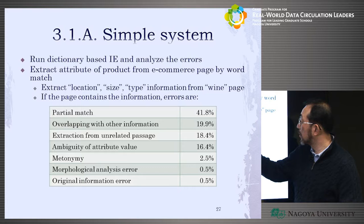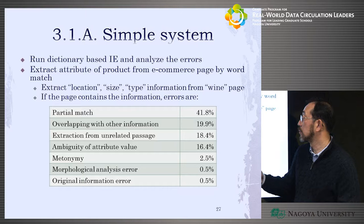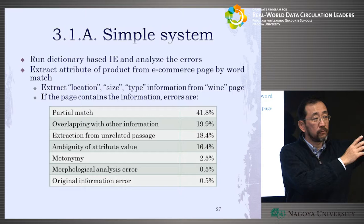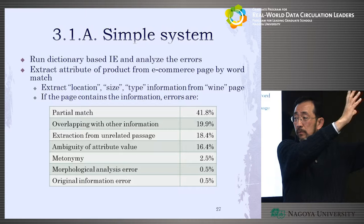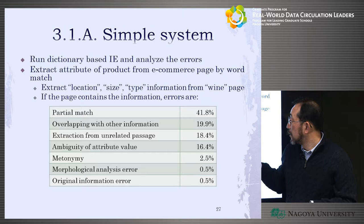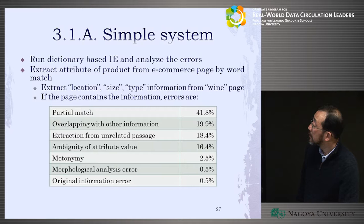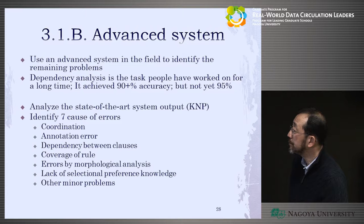Other errors include overlapping with other information, and extraction from unrelated passages. Sometimes the web page of the product talks about a completely different thing — like 'this wine was inherited from a famous France wine, XYZ' — but they don't want to extract information from that passage, only from the main passage. So they have to understand which passage in the page is relevant. That's the problem they found — that's nice analysis.